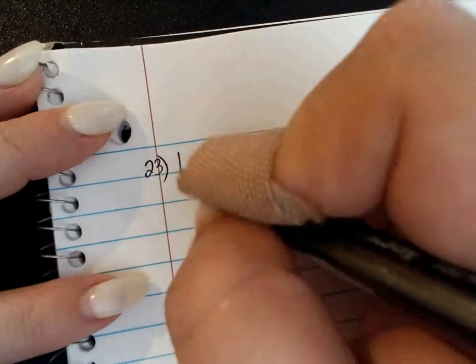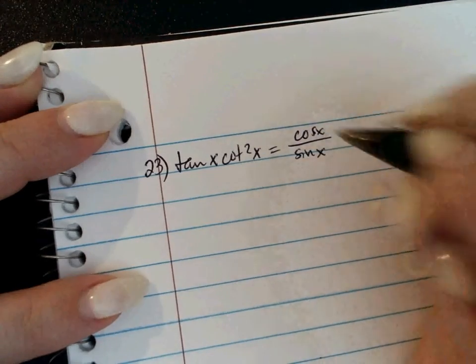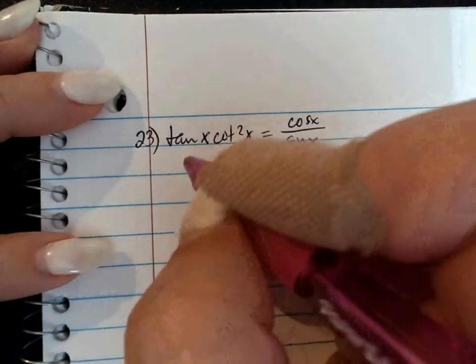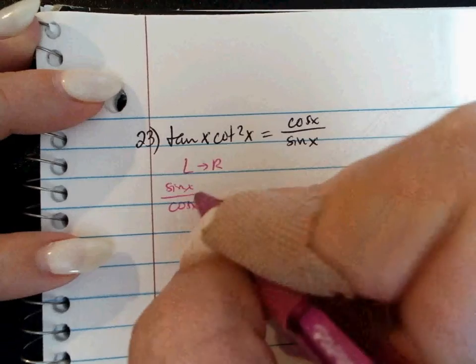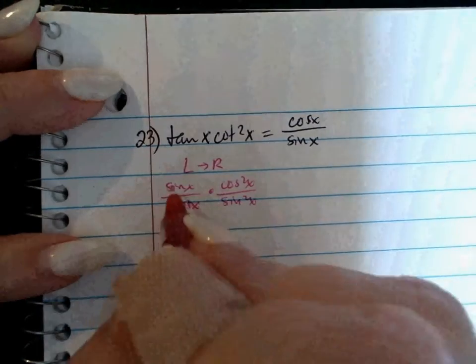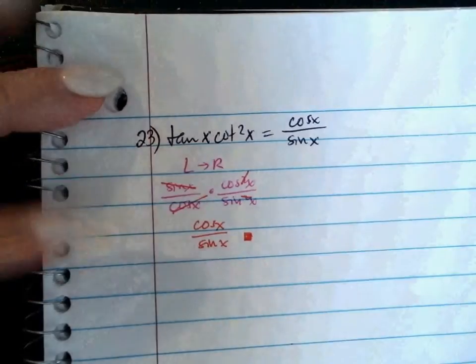Number 23 says tangent times cotangent squared equals cosine over sine. The most obvious approach is to just express everything in terms of sines and cosines, going left to right: sine over cosine times cosine squared over sine squared. The sines and cosines simplify — one sine cancels with the other, and one cosine cancels — leaving cosine over sine. Done.